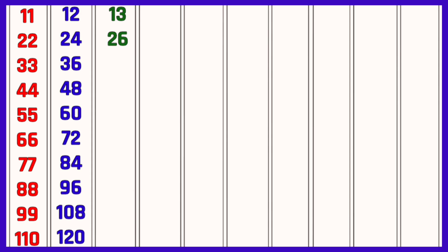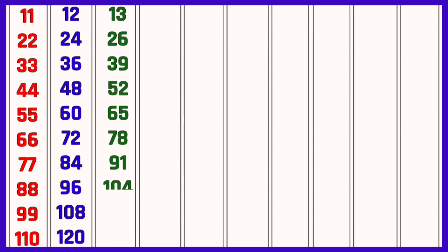Table of 13: 13 ones are 13, 13 twos are 26, 13 threes are 39, 13 fours are 52, 13 fives are 65, 13 sixes are 78, 13 sevens are 91, 13 eights are 104, 13 nines are 117, 13 tens are 130.